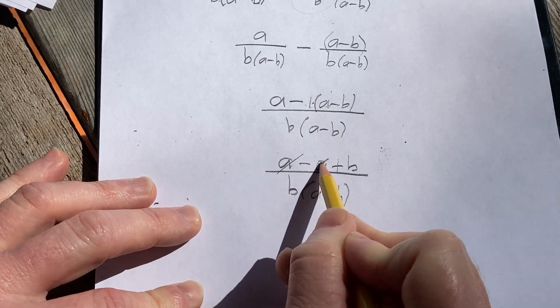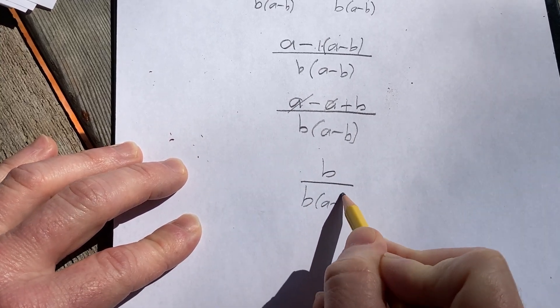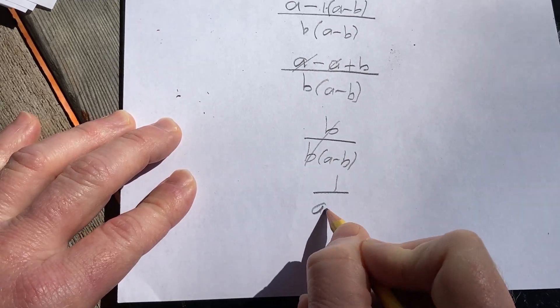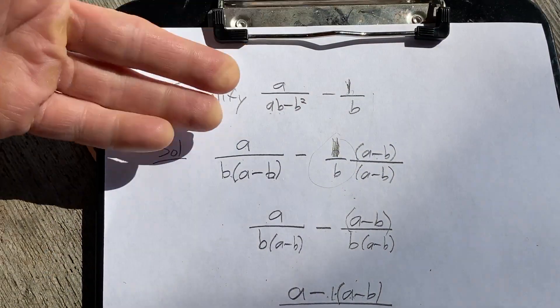And now these cancel, so we end up with b over b times a minus b. These cancel, so we get 1 over a minus b. And that would be the simplified version of our original expression.